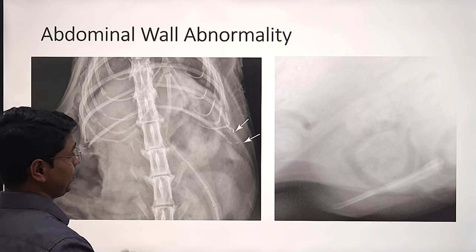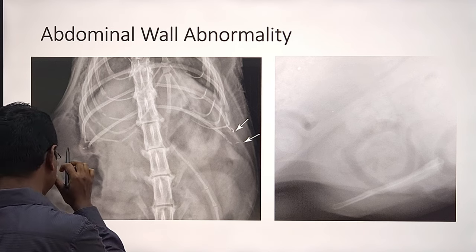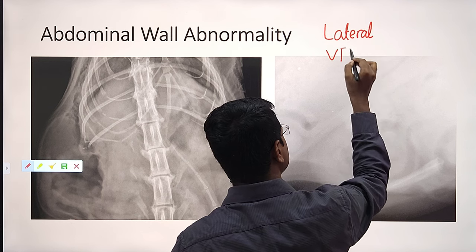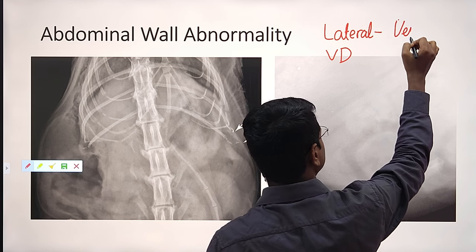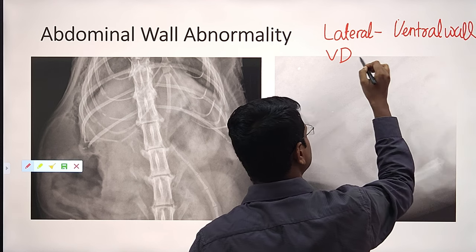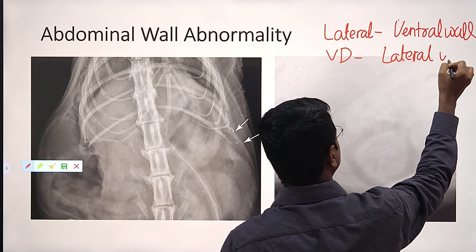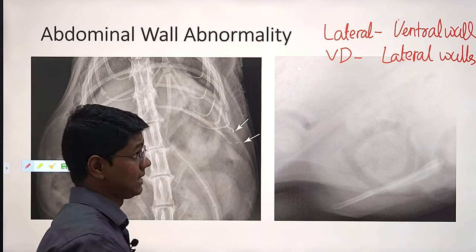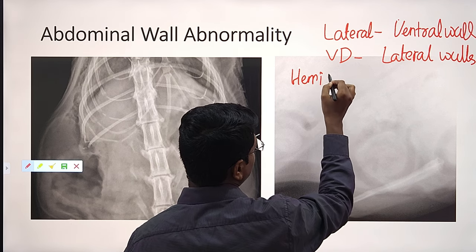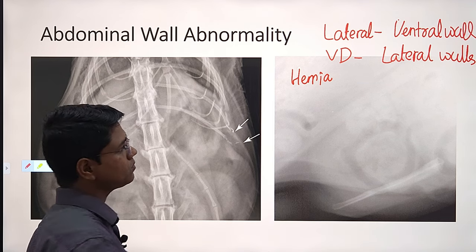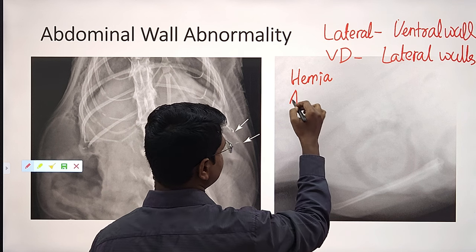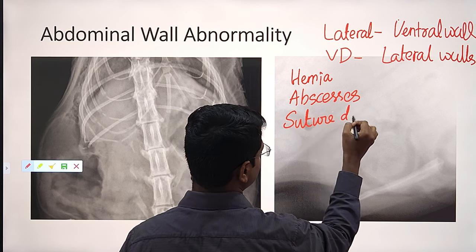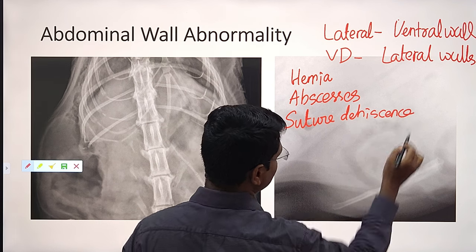Next, we will go for the abdominal wall. The abdominal wall can be evaluated in lateral radiographs as well as dorsal ventral or ventrodorsal radiographs. In lateral radiographs, you will be evaluating the ventral wall. In ventrodorsal, you will be evaluating the lateral walls. By this you can diagnose many things — most important is hernia. You can identify any abnormality or rupture of the musculature, and also subcutaneous abscesses or suture dehiscence, especially musculature suture dehiscence.